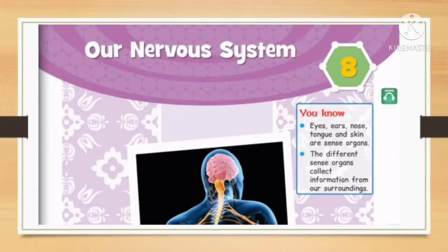Hello dear students, welcome back to the class of science. Dear class, we have completed the explanation of chapter 8 which is our nervous system. We have also done some of the book exercises up to short answer questions. In this video, we are going to complete the remaining portion and by this our syllabus of science will be completed. So dear students, let's start doing the remaining things.